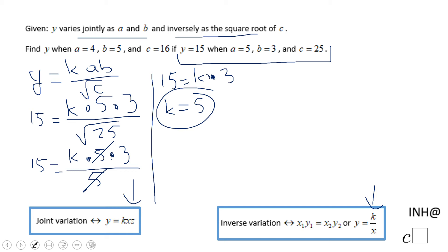In the second step of this problem, we need to find y when a is 4, b is 5, and c is 16. I'm going to write the equation again, but now I'll replace k with 5. This is the equation that models our problem.